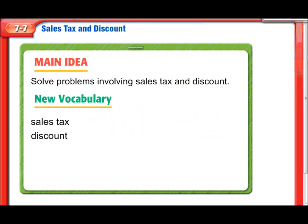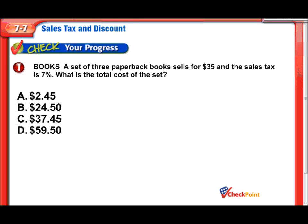Here we are, our main idea. We're solving problems with sales tax and discount. So, a set of three paperback books sells for $35 and the sales tax is 7%. What is the total cost of the set? It's important to understand what we're supposed to find — we're not just finding the tax, we're finding the total cost.